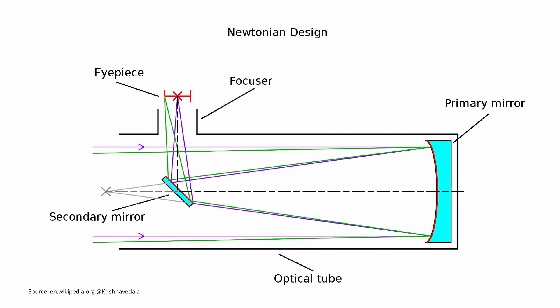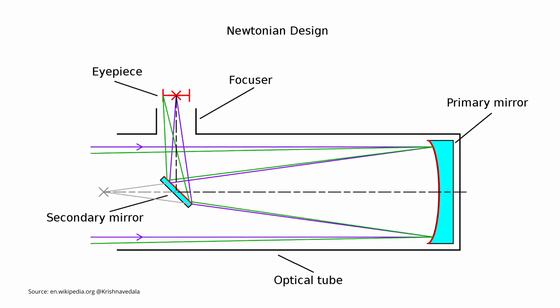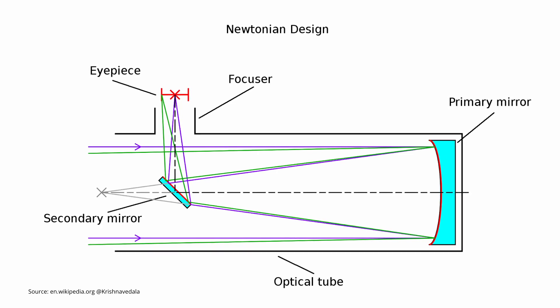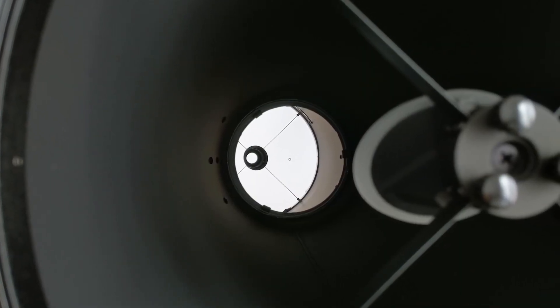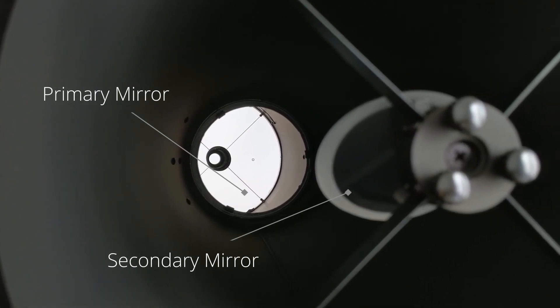The Dobsonian was designed by John Dobson in the 1960s and quickly became the most popular reflecting telescope. A Newtonian reflector works by gathering light that enters the telescope, which first gets reflected by the primary parabolic mirror at the far end of the optical tube. From there the light gets reflected back towards the smaller secondary mirror near the front of the tube. Because the secondary mirror is tilted at 45 degrees, the light is reflected towards a focuser on the side of the tube, where the eyepiece takes over.